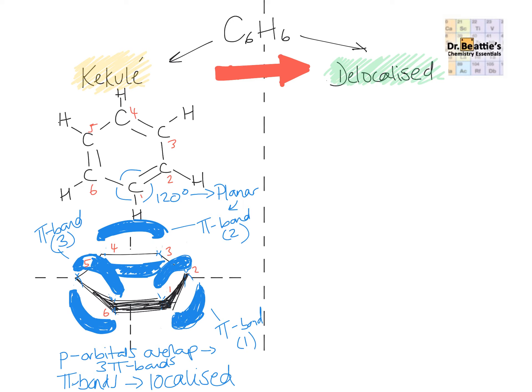We have a set of p-orbitals that overlap to form pi bonds. But because these pi bonds are localized between specific carbons, we need to note this in the Kekulé structure. When we say localized, we mean they are kept between specific carbons — this pi bond is always between carbons 1 and 2. Key features of Kekulé's model: bond angles of 120 degrees, planar, but importantly the pi bonds are localized, coming from p-orbitals that overlap.